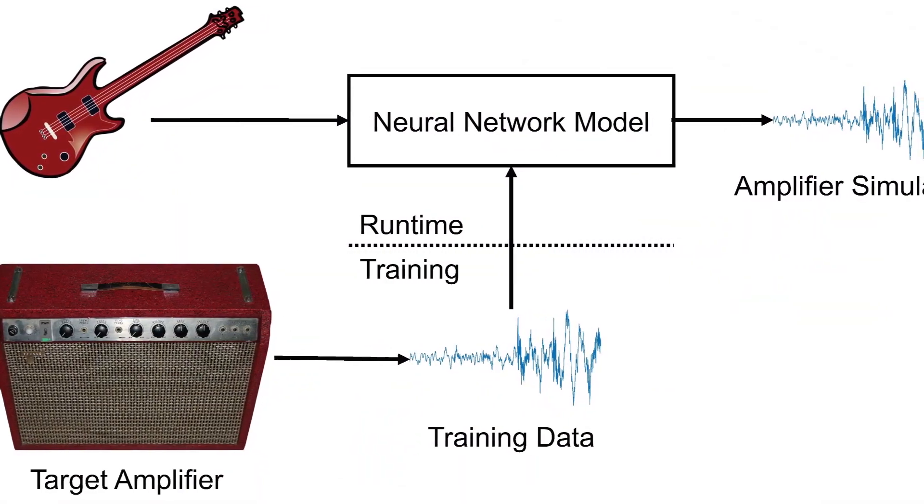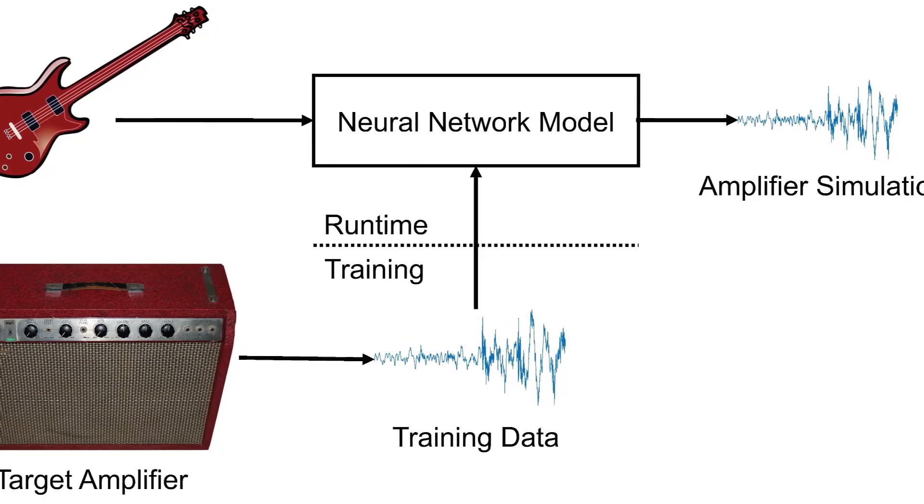On the subject of how NAM works: NAM uses machine learning to replicate your analog gear. At its core, you first reamp a reference audio file through your analog chain via the reamping setup, record that, and then use so-called training, which compares the reference audio file against your re-recorded file. The machine learning calculates the differences between the reference signal and your reamped signal and creates a so-called model, which can then be used within a plugin or the standalone NAM application.